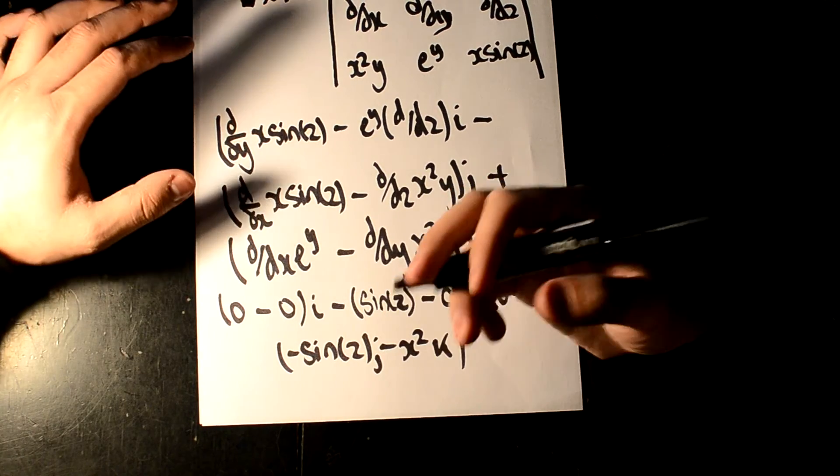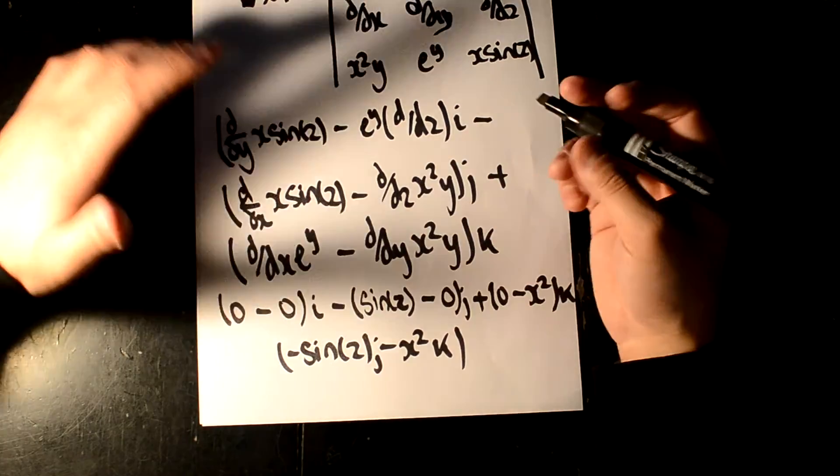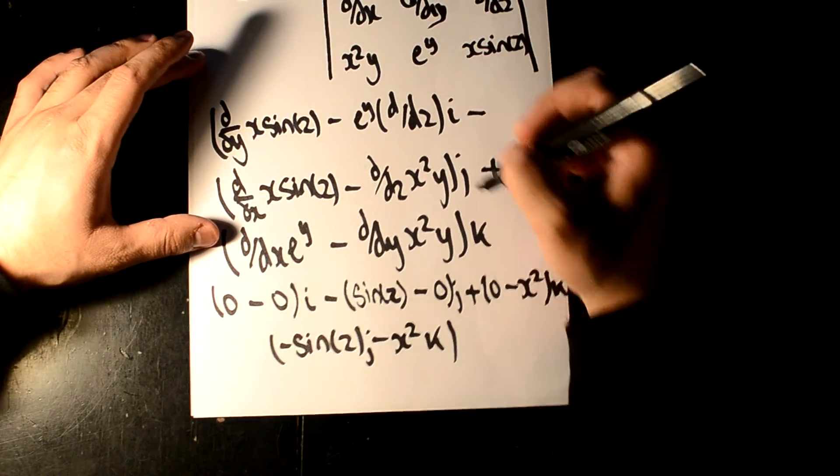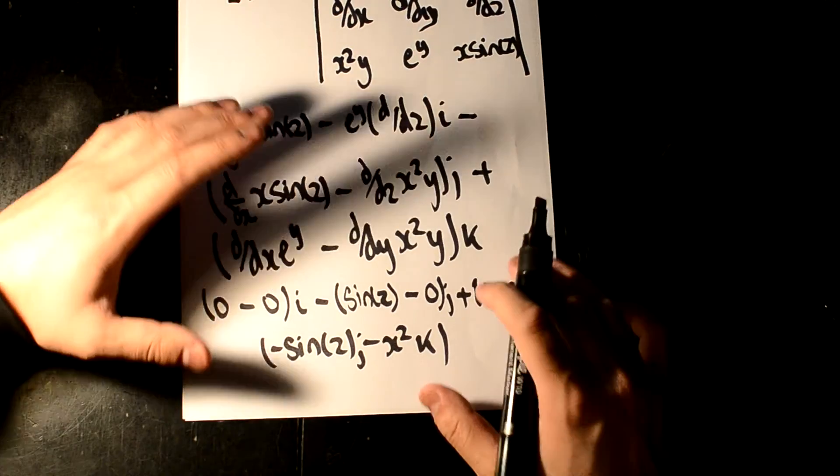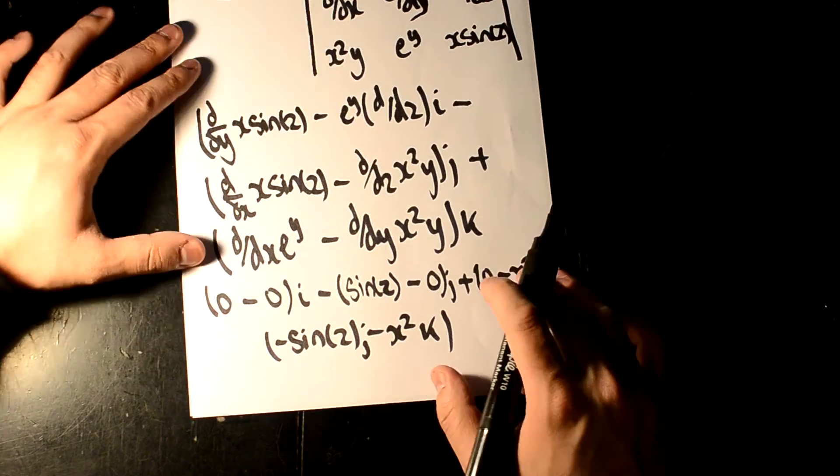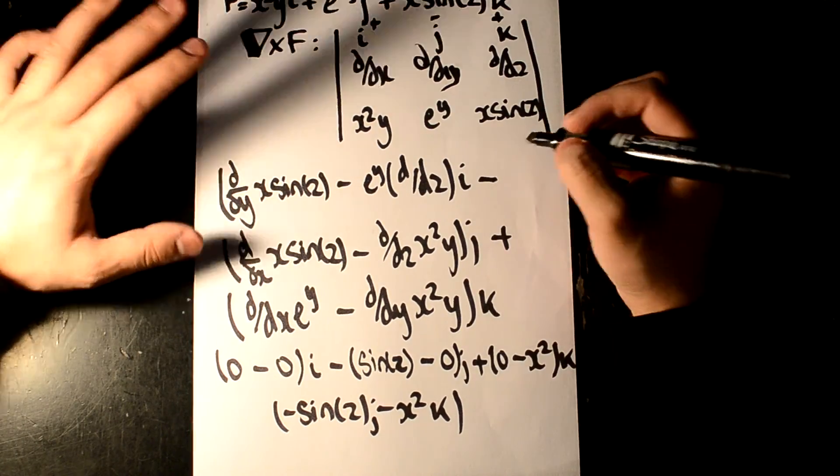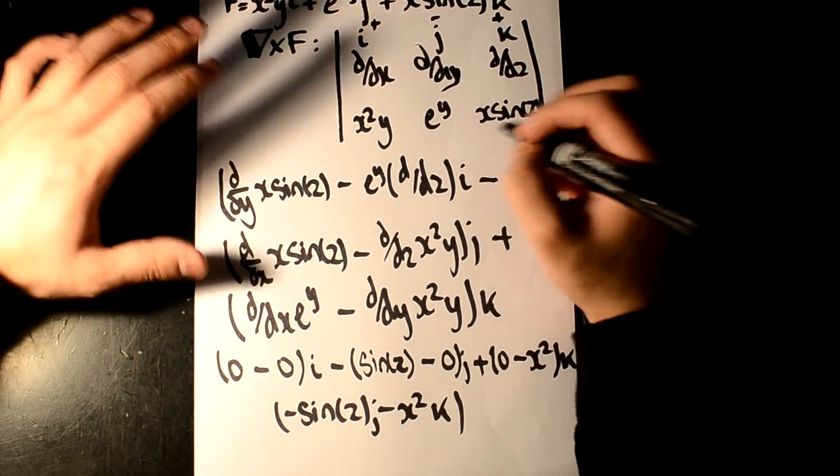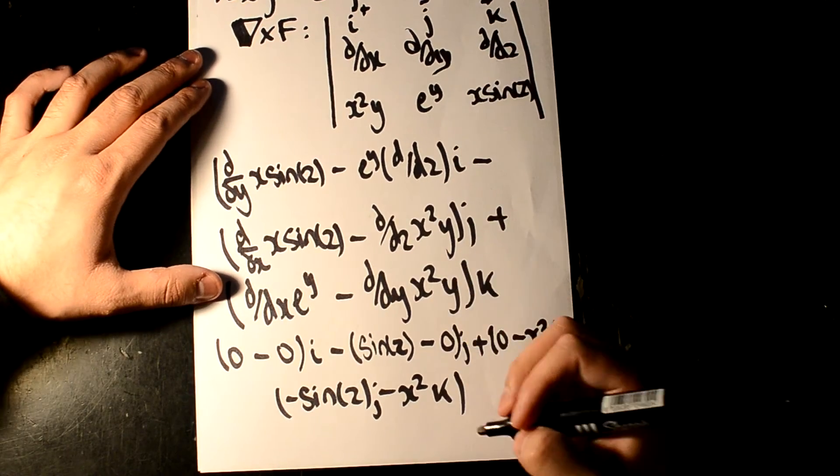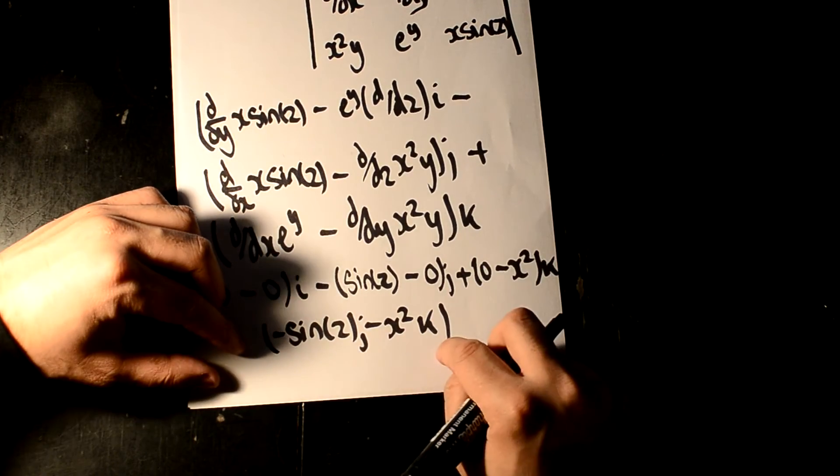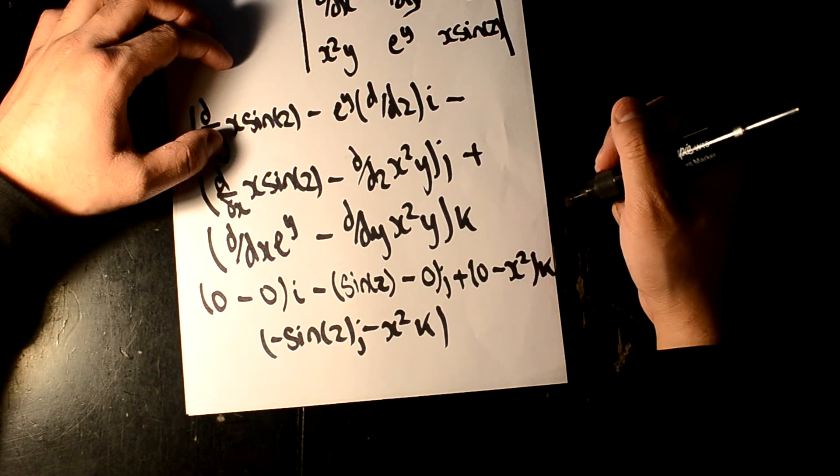Sometimes when you are differentiating things, people are getting confused and missing out the i, j, and k. When finding the curl of a vector field, where it asks you for nabla cross f, not nabla dot f, that's two very different things. You must keep it in j and k.